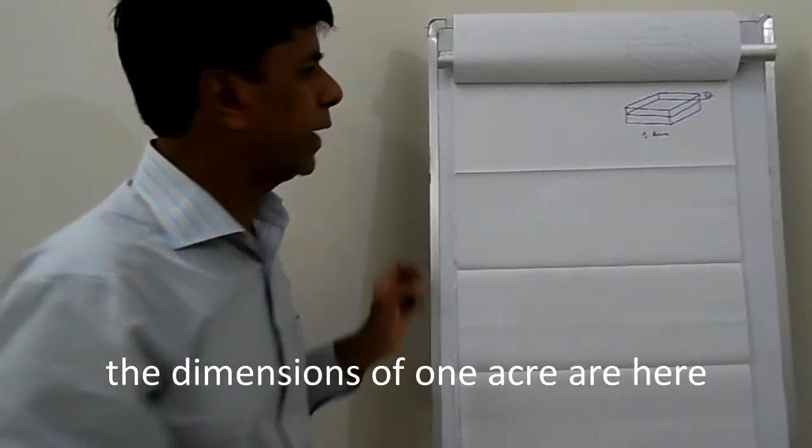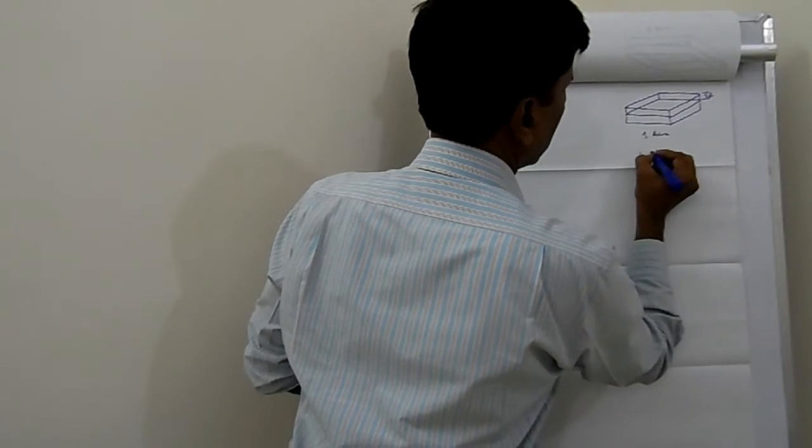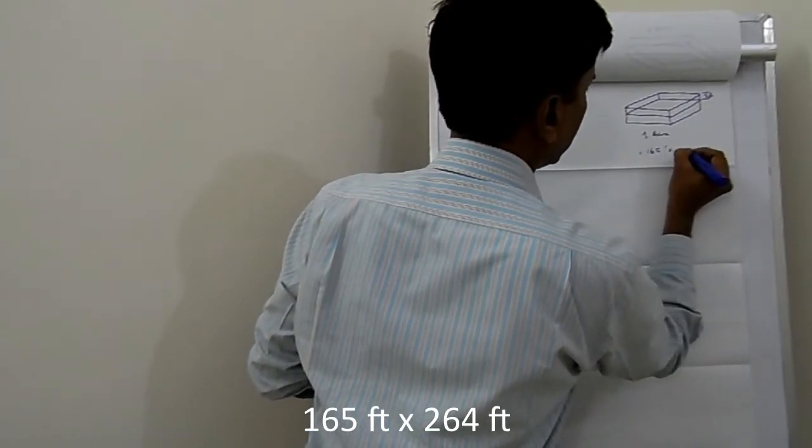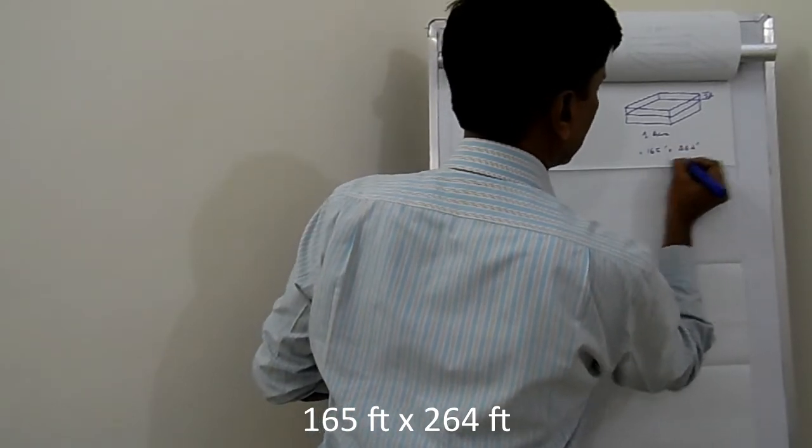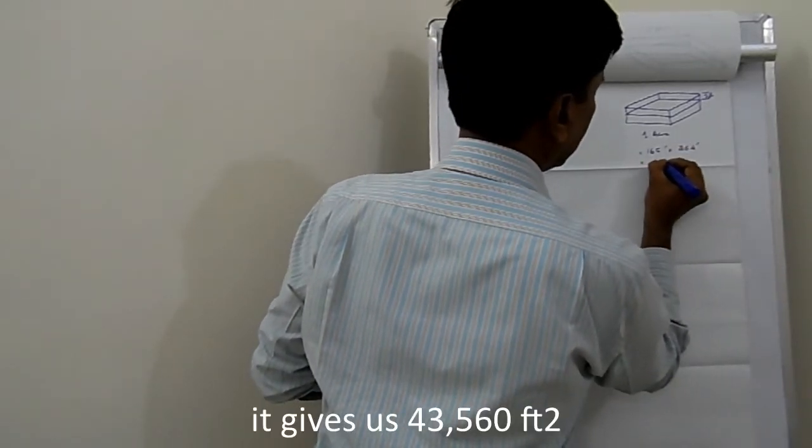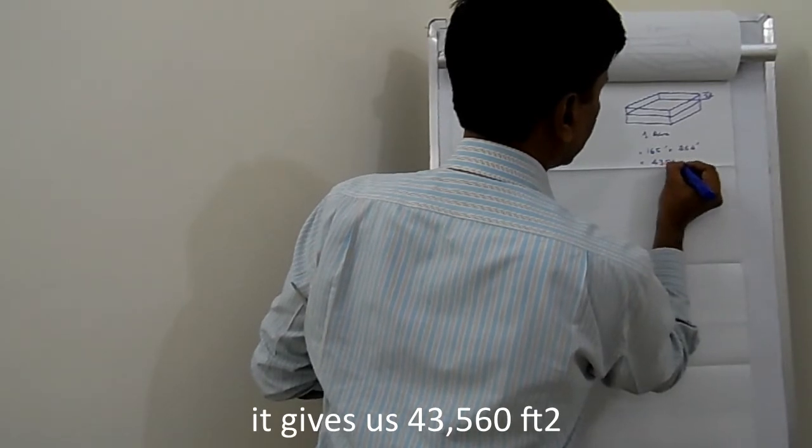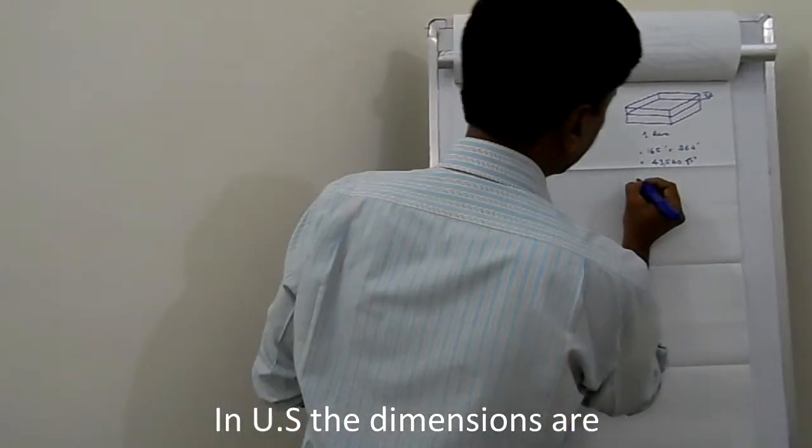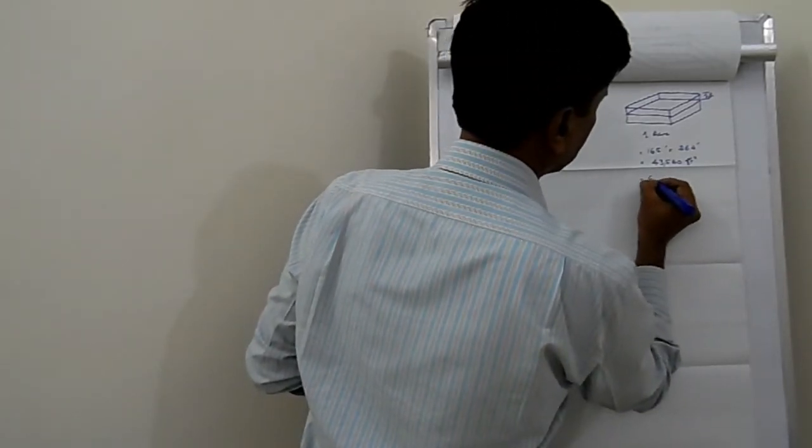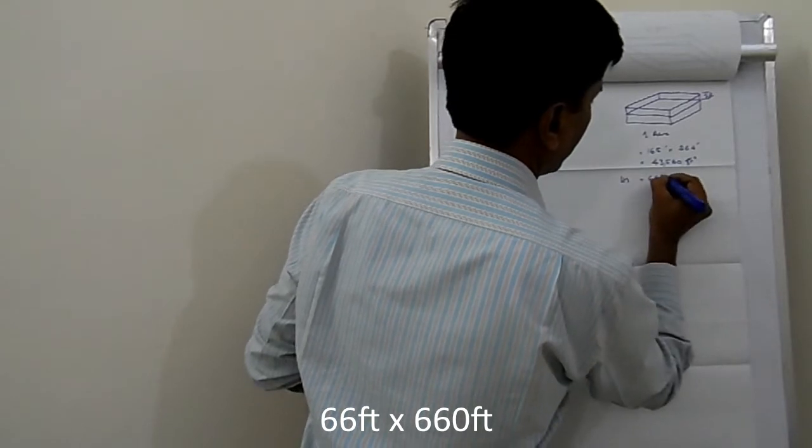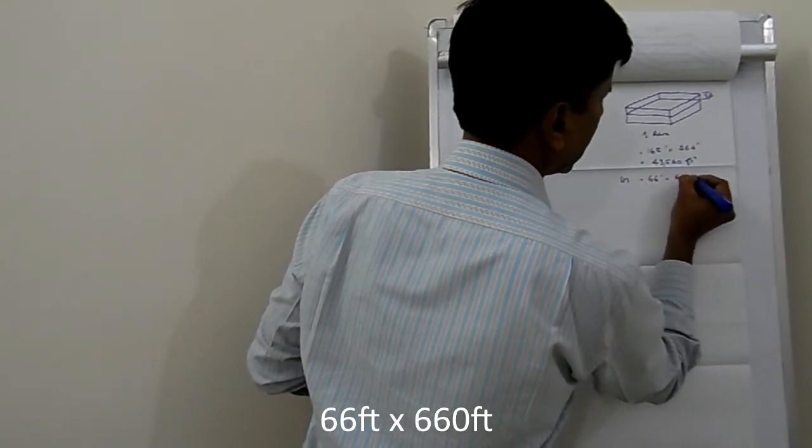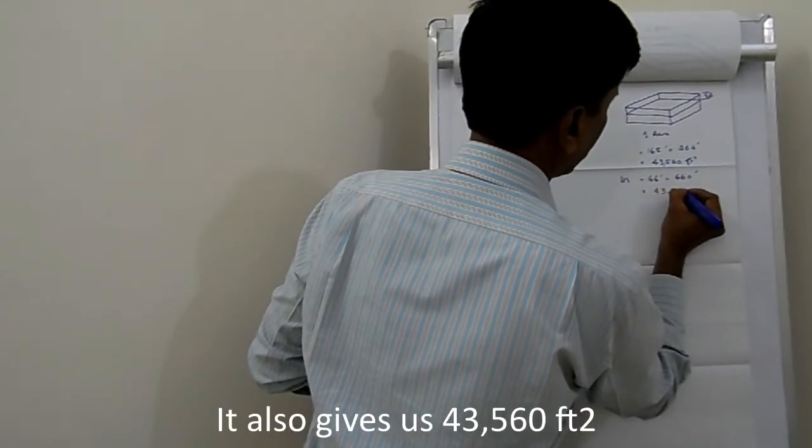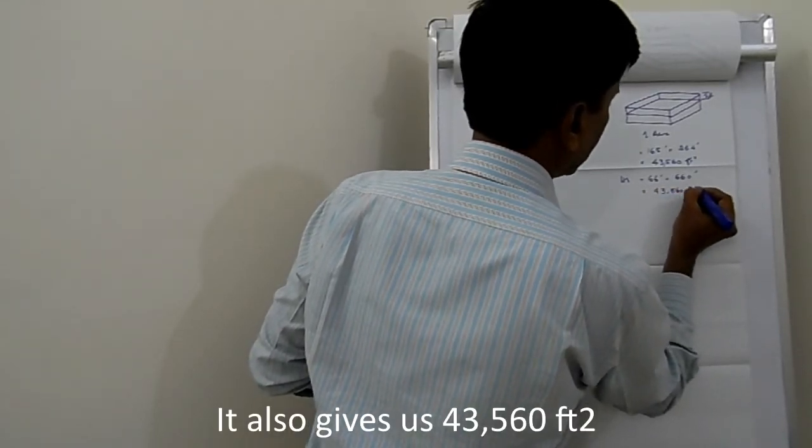The dimensions of one acre are here 165 feet by 264 feet. It gives us 43,560 feet square. In the US, the dimensions are 66 feet by 660 feet. It also gives us 43,560 feet square.